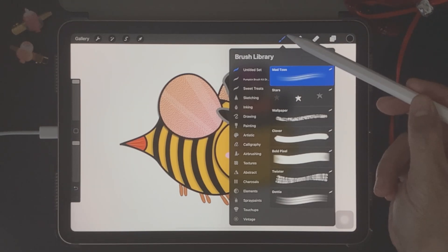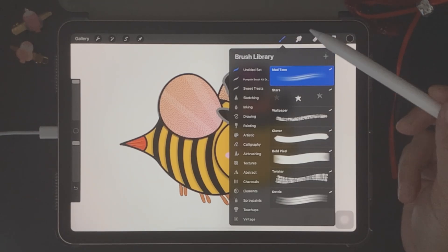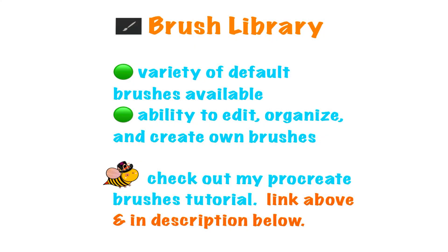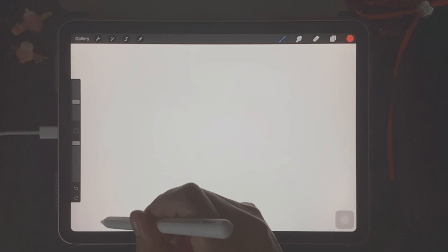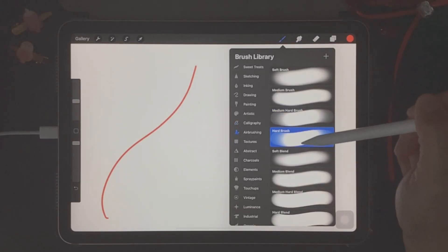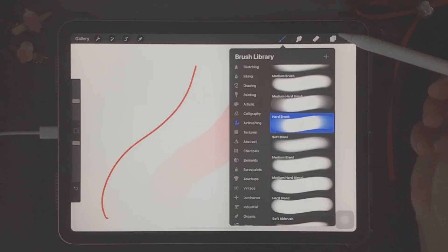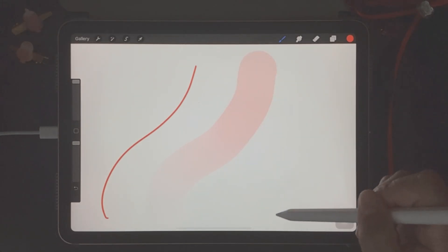The first tool over here that looks like a brush is the brush library. All the brushes here are organized into theme categories. There are a lot of default brushes that come with your Procreate app. In addition to the default brushes, you can also edit, organize, and create your own brushes. If you'd like to know how to create your own brushes in Procreate, you can check out my Procreate brushes tutorial, which I'll leave a link up above. I'm just going to show you an example of some of the default brushes from the brush library. There are a lot of really cool default brushes that you can play around with.